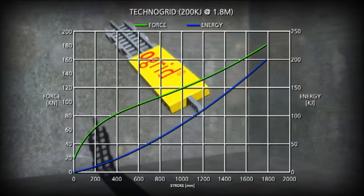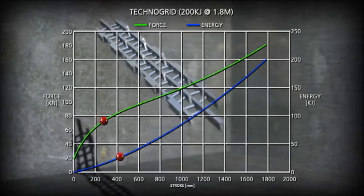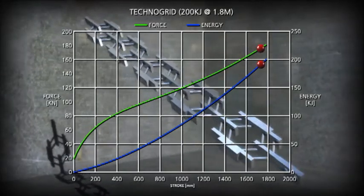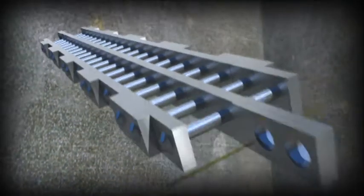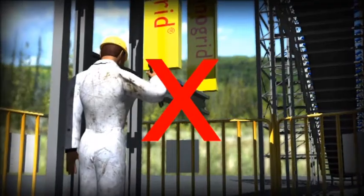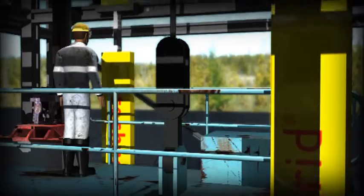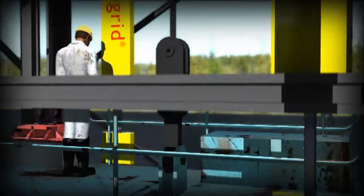Technogrid provides predictable outcomes because of the consistent relationship between energy absorbed, stroke and reaction force. The absence of moving parts results in a virtually zero maintenance requirement. Horn recommends visual inspection.